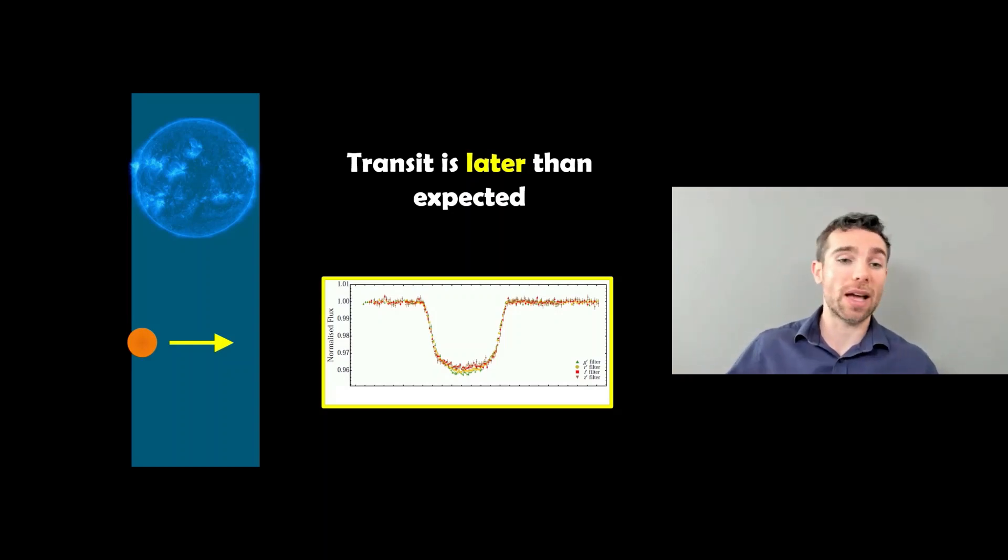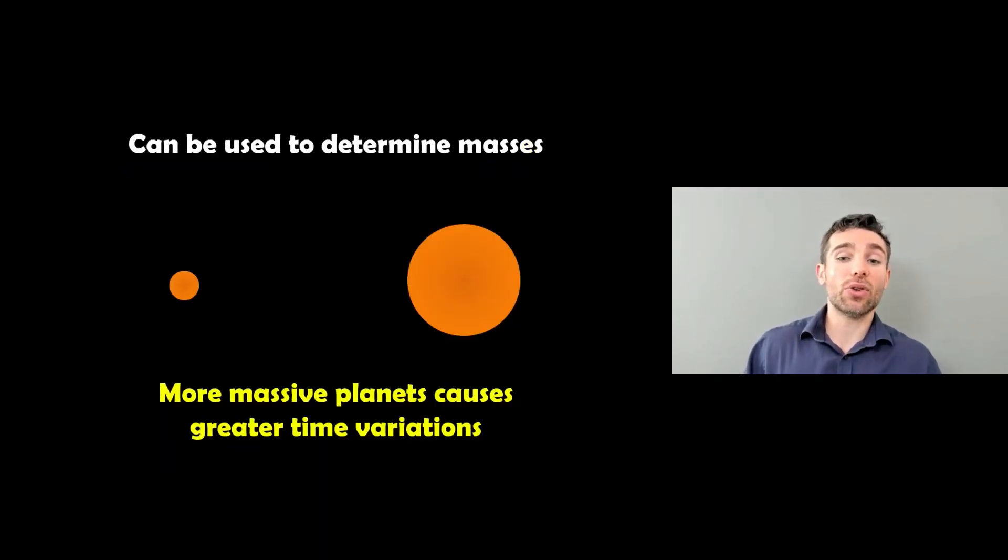The good thing about this is it allows you to determine the masses of the planets, because a more massive planet is going to have a greater effect on the timing variation than a smaller planet. So it can be very useful for finding things like the mass.